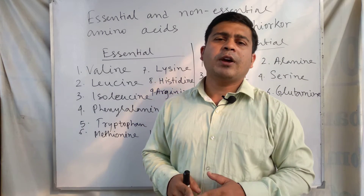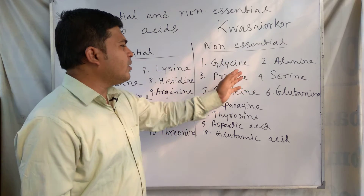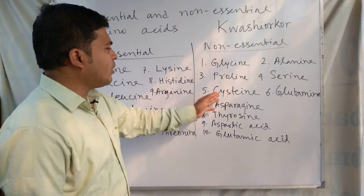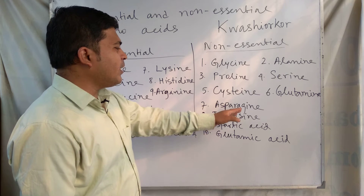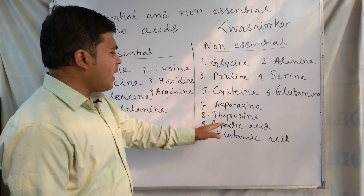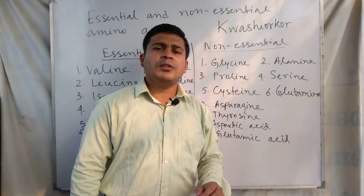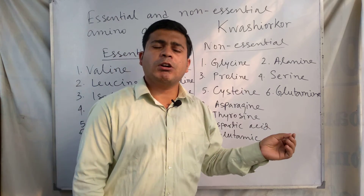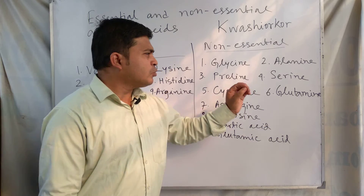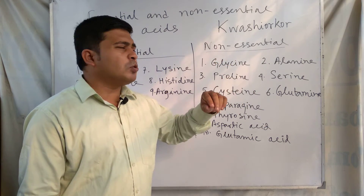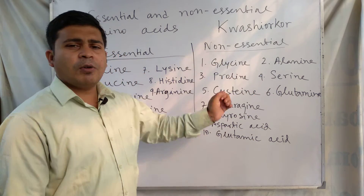The other 10 amino acids are non-essential amino acids. These are: glycine, alanine, proline, serine, cysteine, glutamine, asparagine, tyrosine, aspartic acid, and glutamic acid. These non-essential amino acids found in proteins can be synthesized in our body, so it is not necessary to take them through our diet.